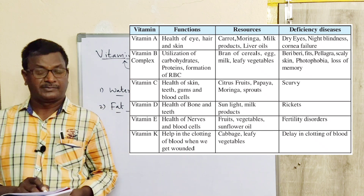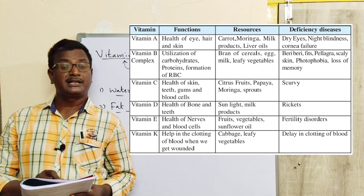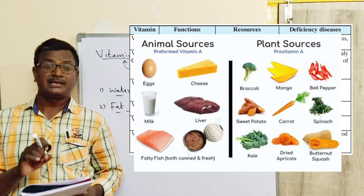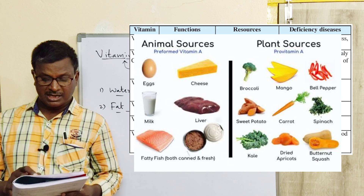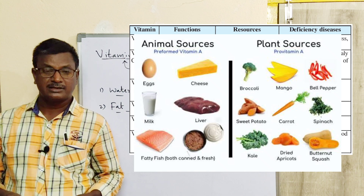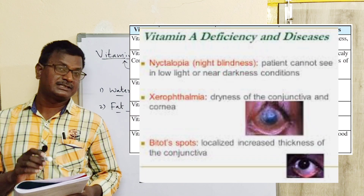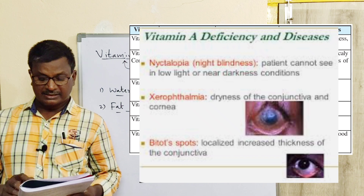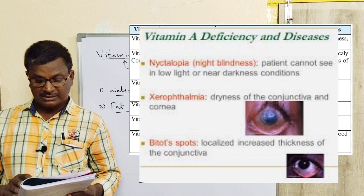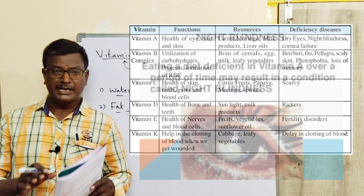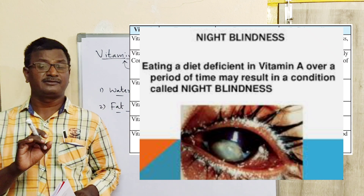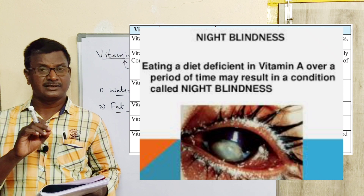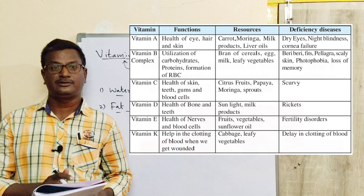Take vitamin A. The functions of vitamin A are health of the eyes, hair, and skin. Sources include carrot, moringa, milk products, and liver oils. Deficiency of vitamin A causes dry eyes, night blindness, and cornea failure. Night blindness means at night time a person cannot see anything. This disease is caused by the deficiency of vitamin A.